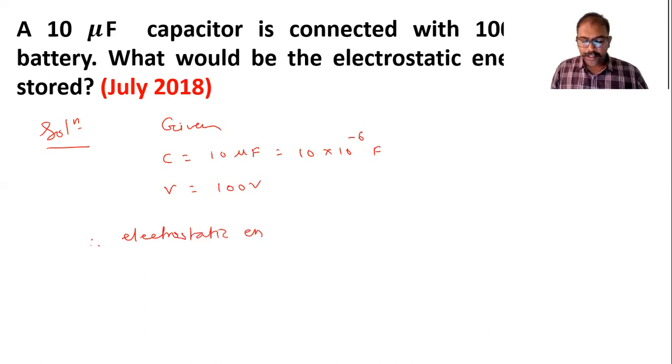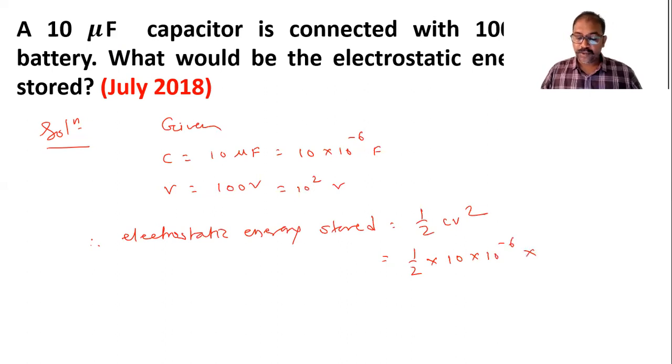Electrostatic energy stored is given by the formula (1/2)CV². C and V are given, so we substitute the values. 100 can be written as 10². So (1/2) × 10 × 10⁻⁶ × (10²)².